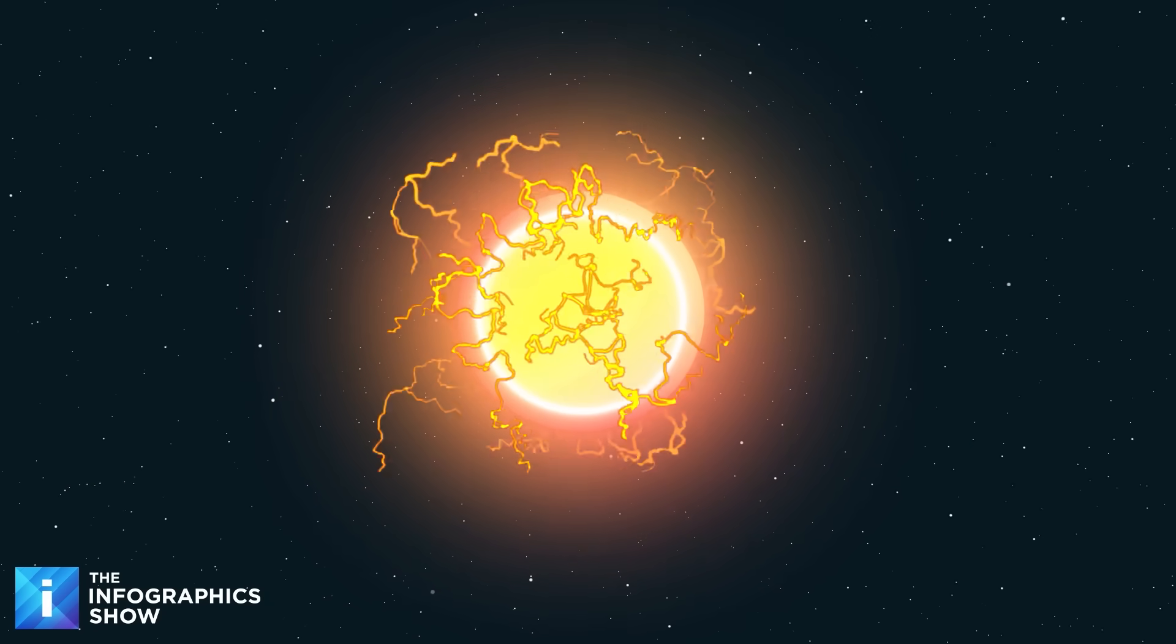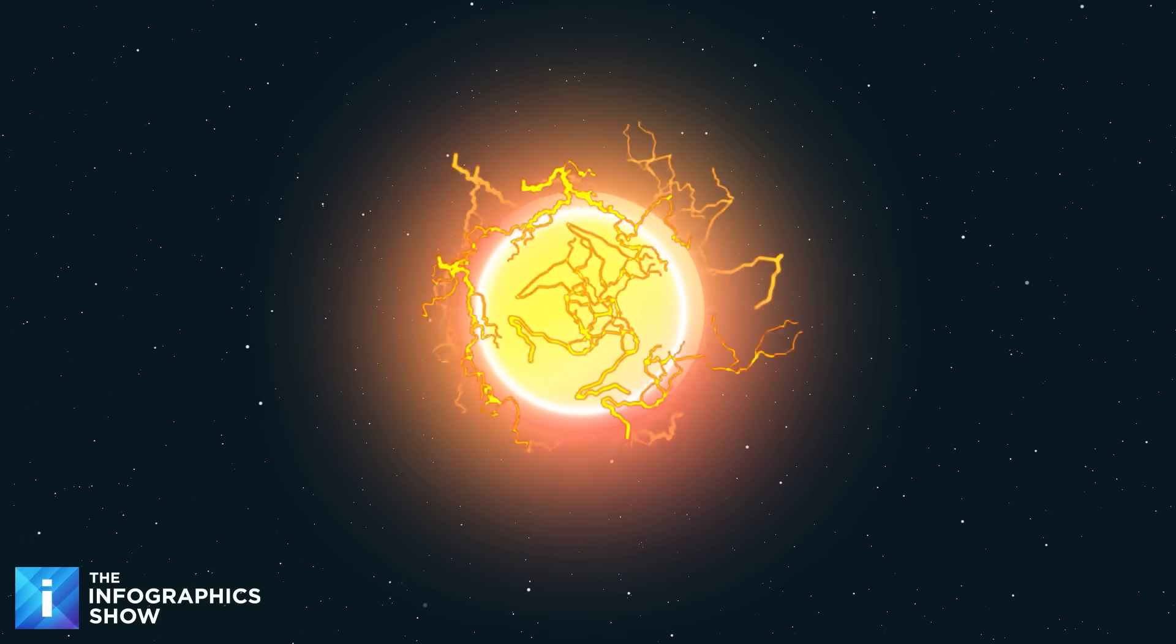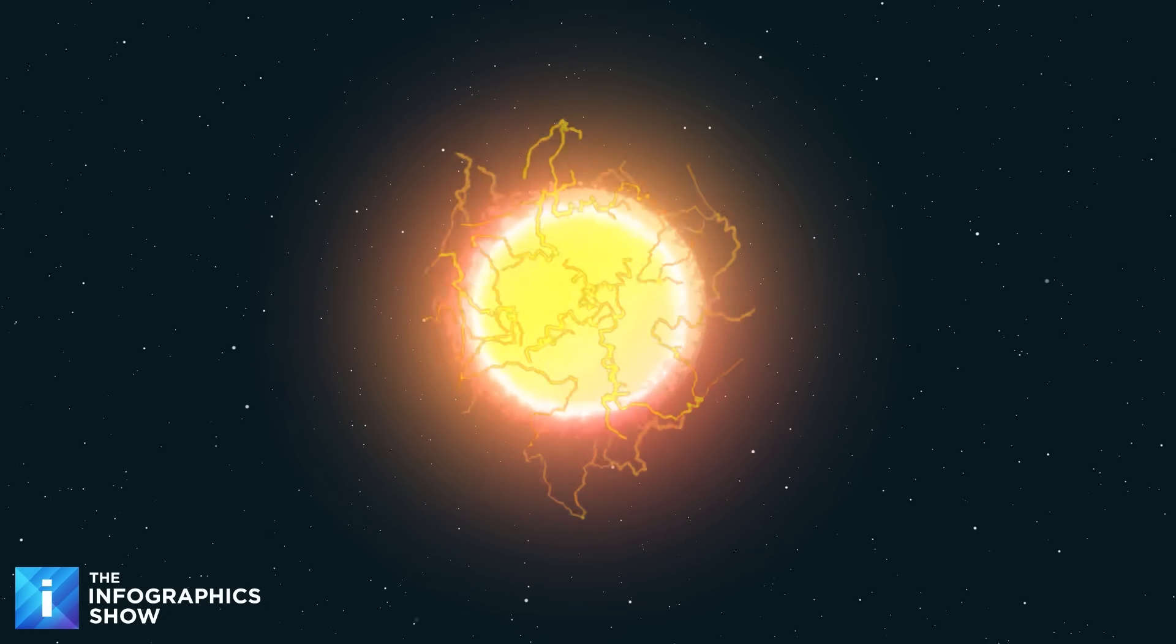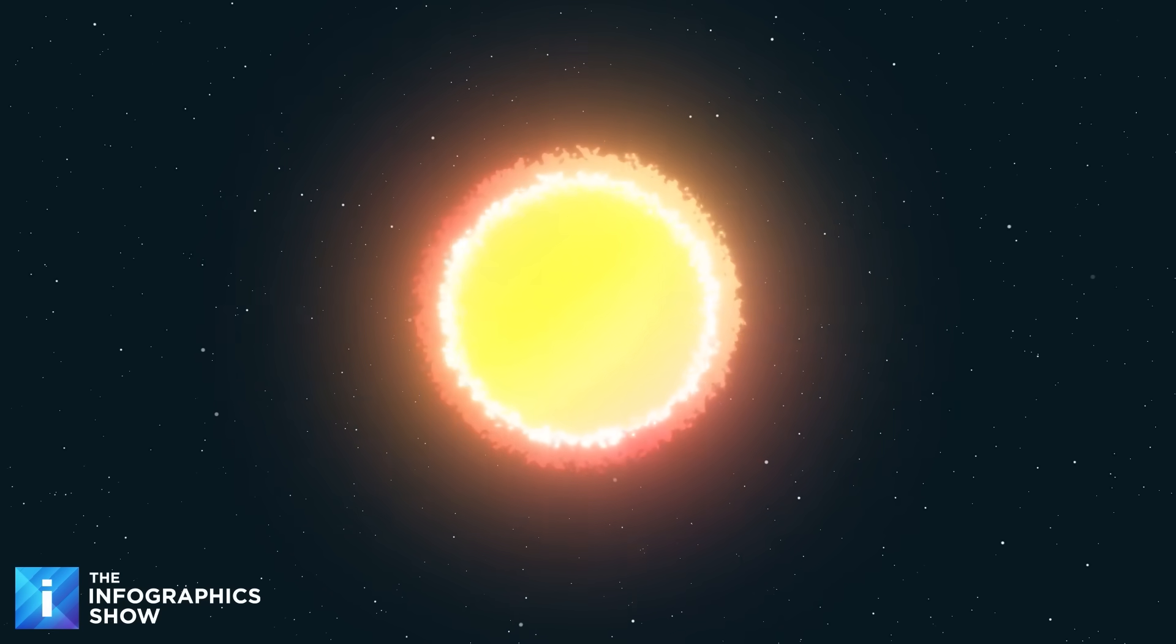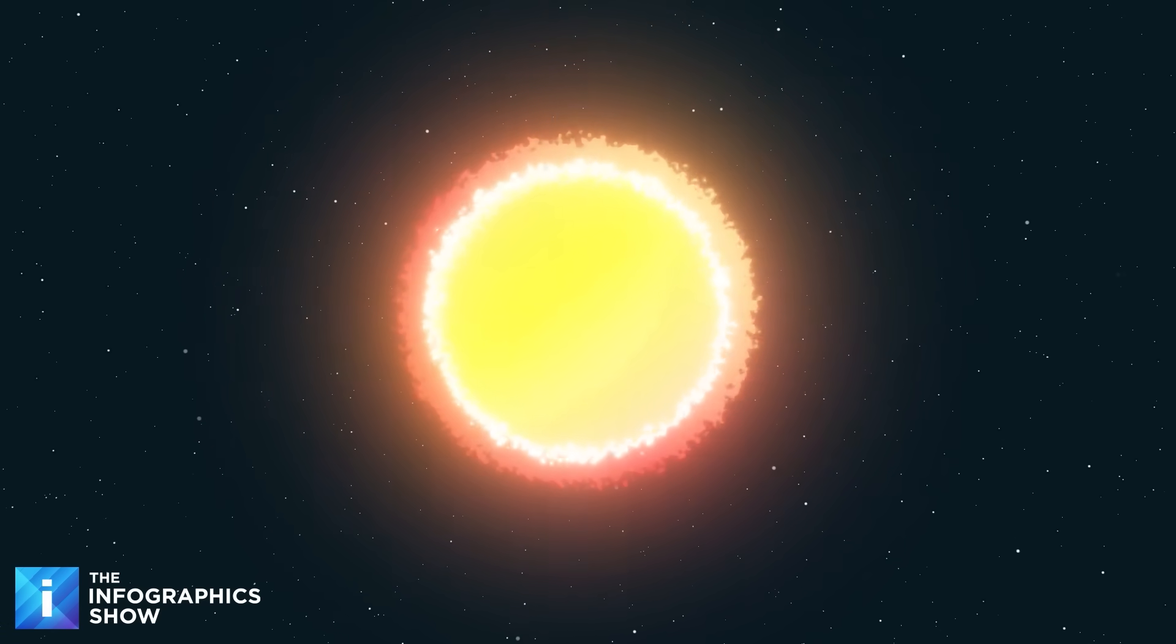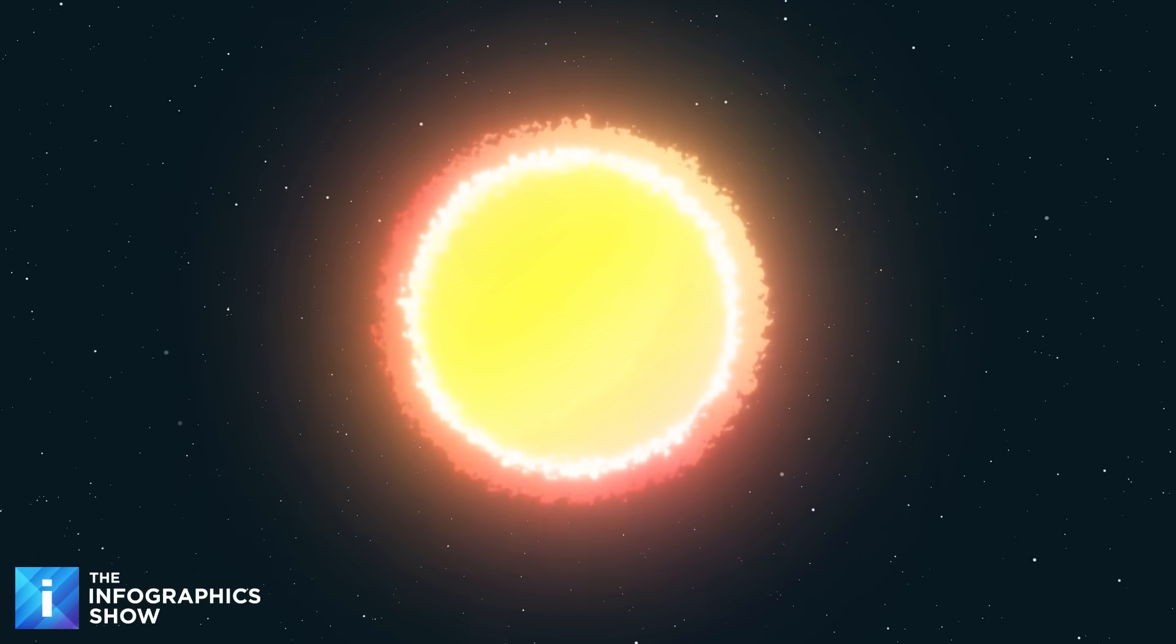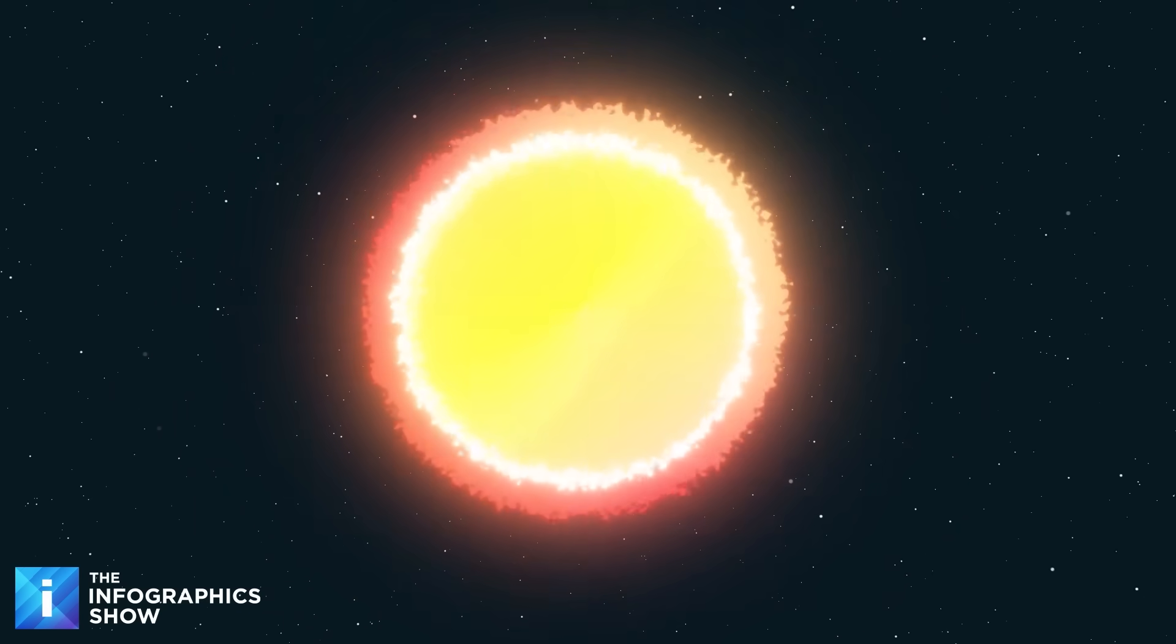When a star at least 20 times more massive than our sun runs out of fuel, it faces a crisis. For millions of years the star has been in perfect balance, nuclear fusion pushing outward from the core, gravity pulling inward. But once that fuel is gone, that balance collapses.